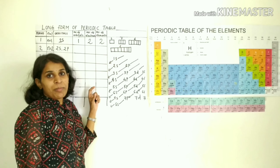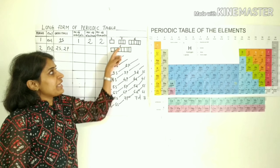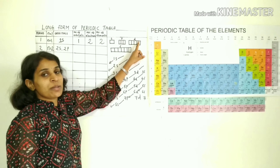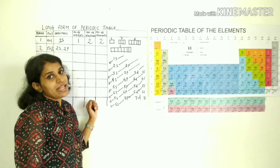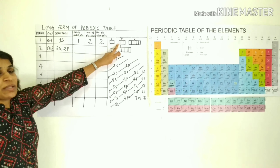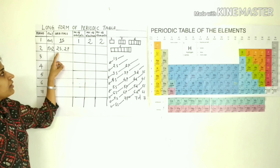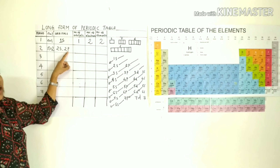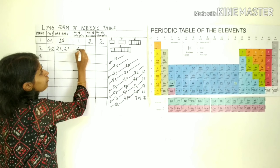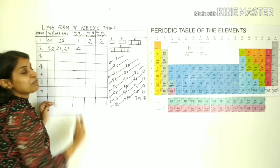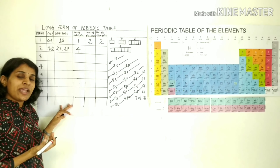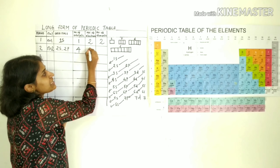For the second period, we have 1 s-orbital and 3 p-orbitals, giving a total of 1 + 3 = 4 orbitals. The number of electrons is 4 × 2 = 8 electrons. Since the number of electrons equals the number of elements, the second period has 8 elements.